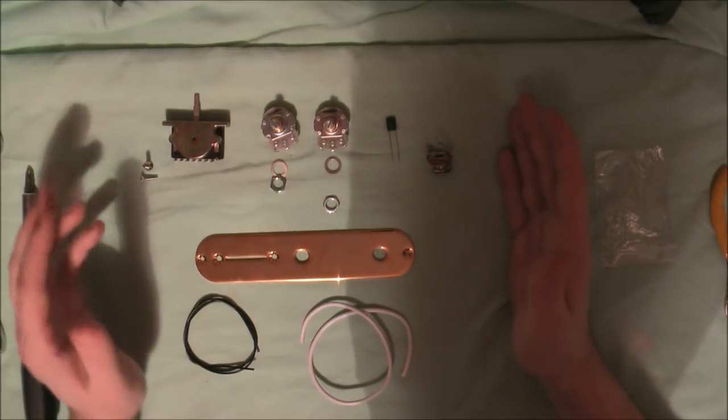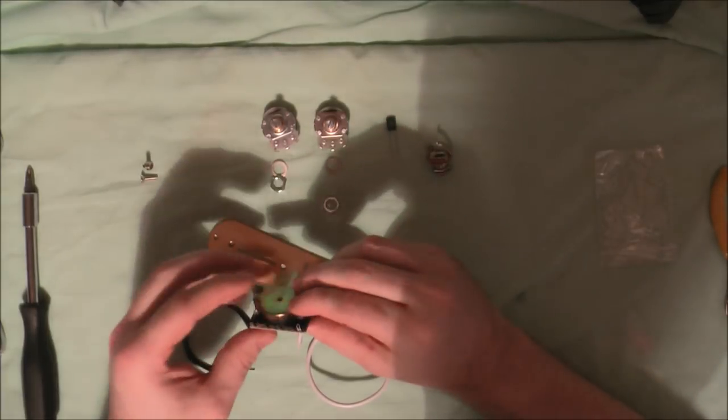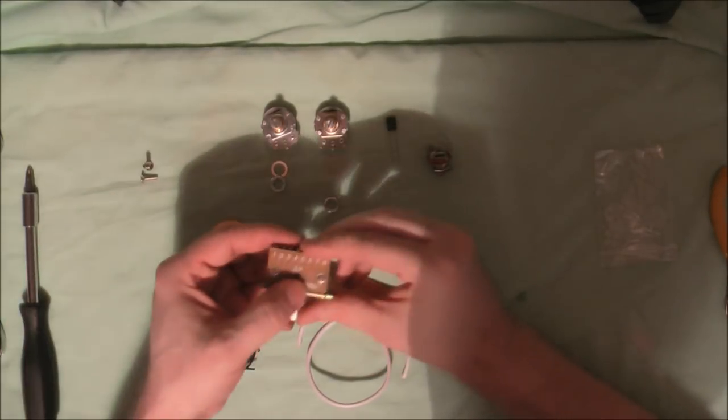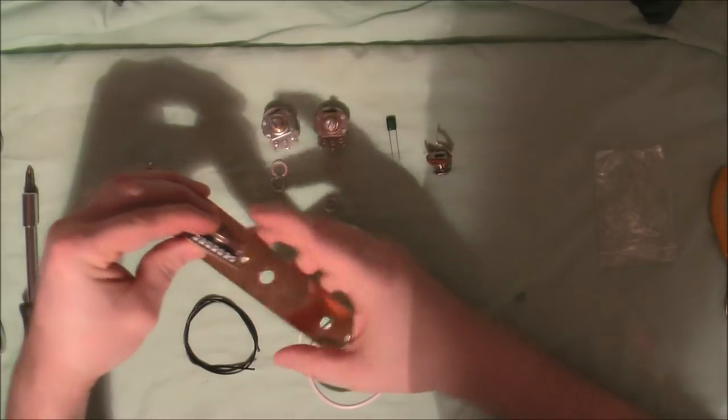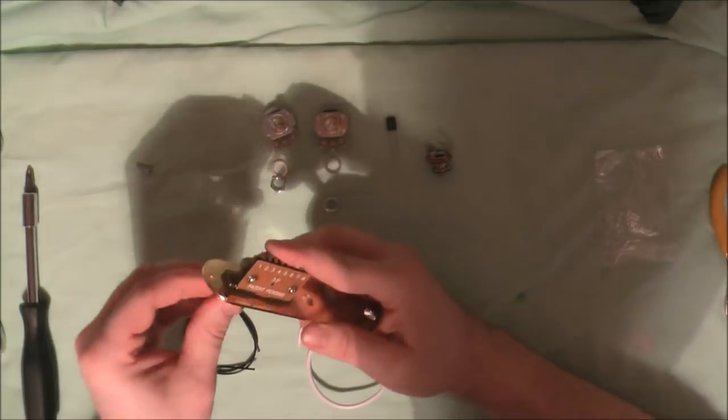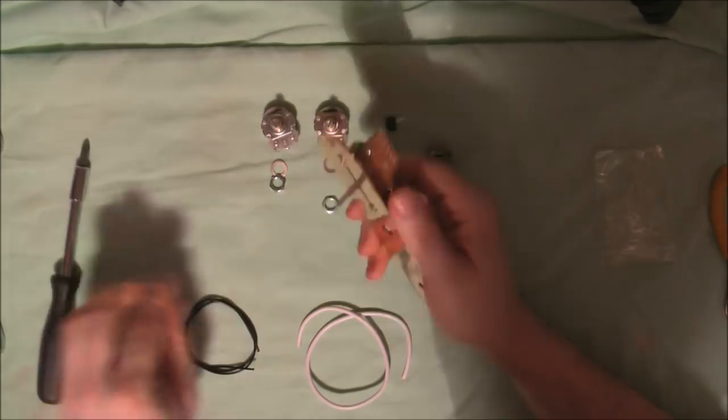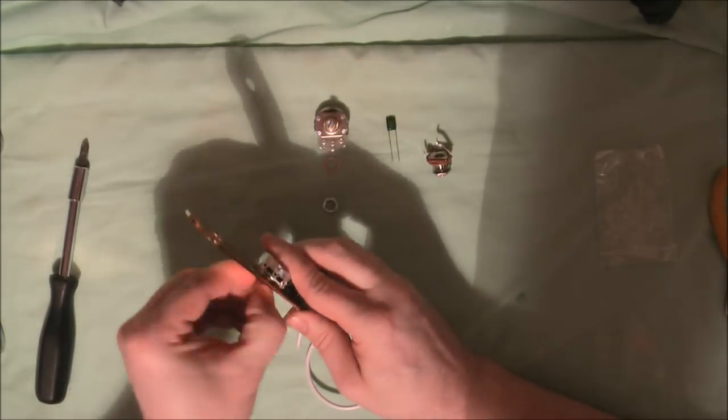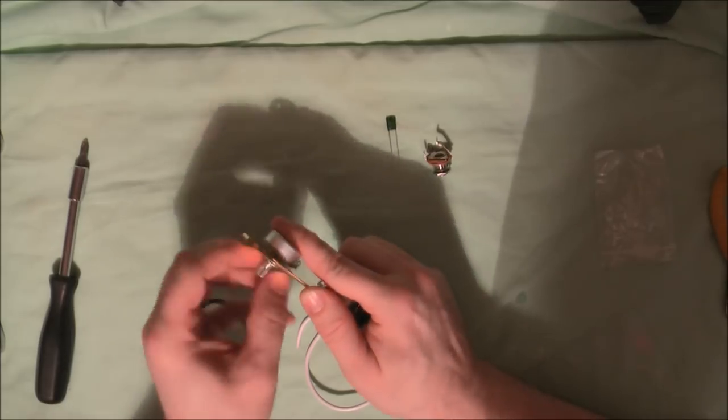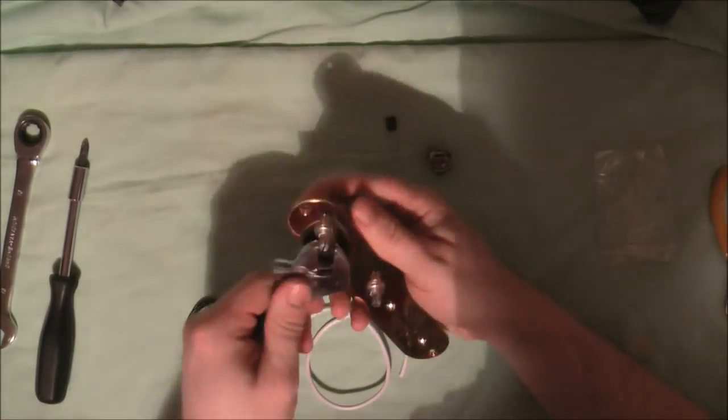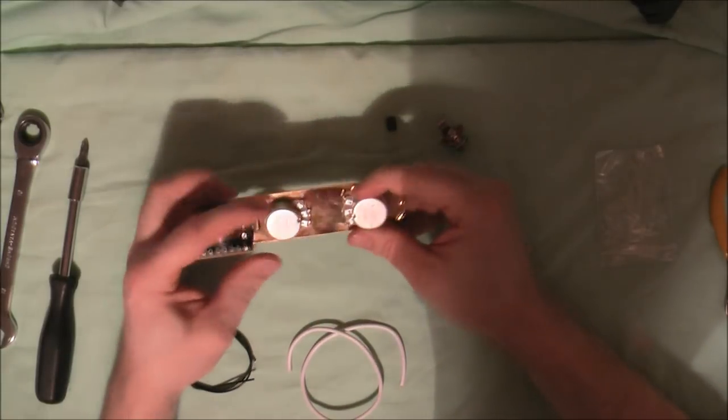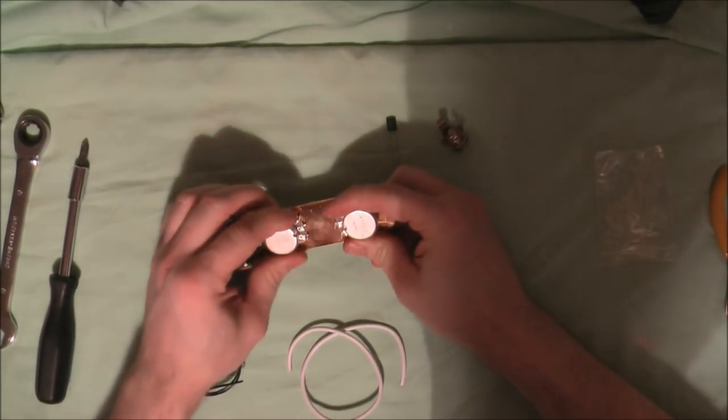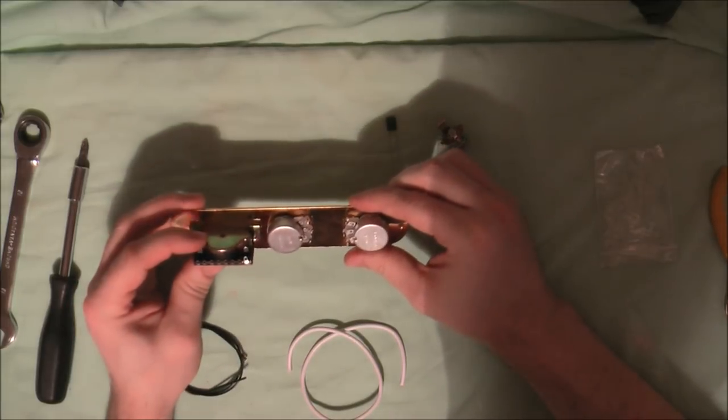So the first thing I want to do is build a control plate and I'll put the switch on first. I like to have the switch with the back facing to the left with the holes for the pots down at the bottom. Okay so that's the basics done, both pots facing each other, slightly off but that's okay, and the switch on there.